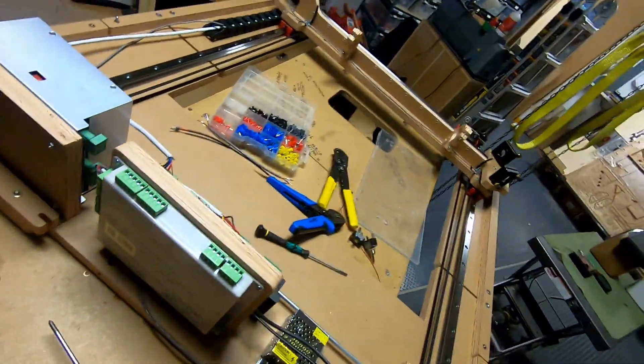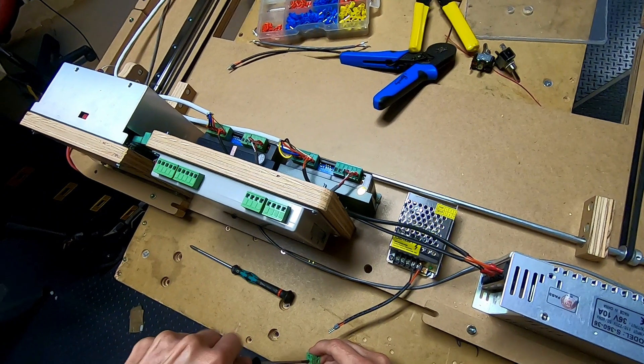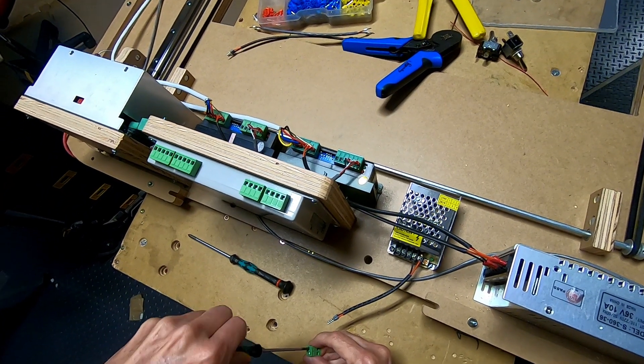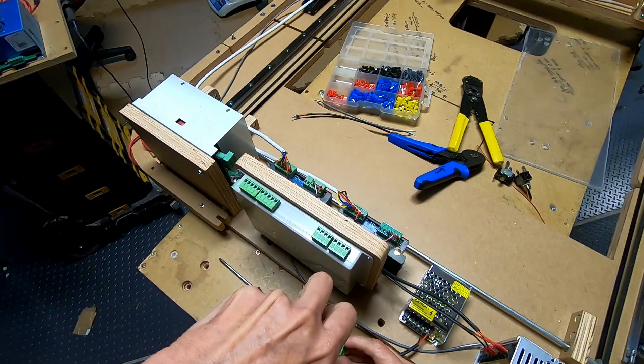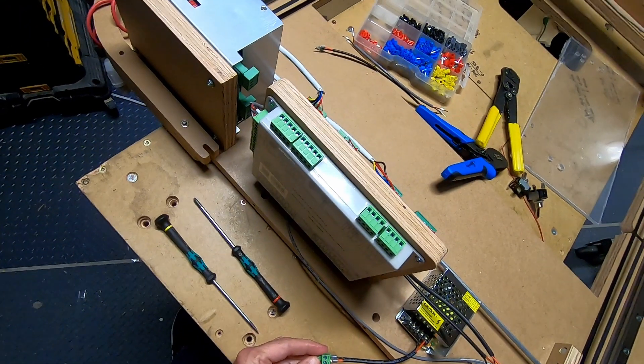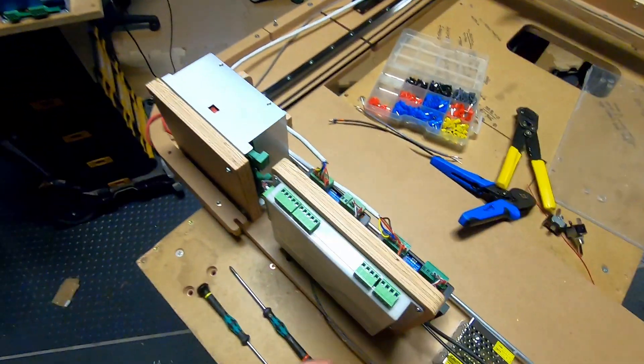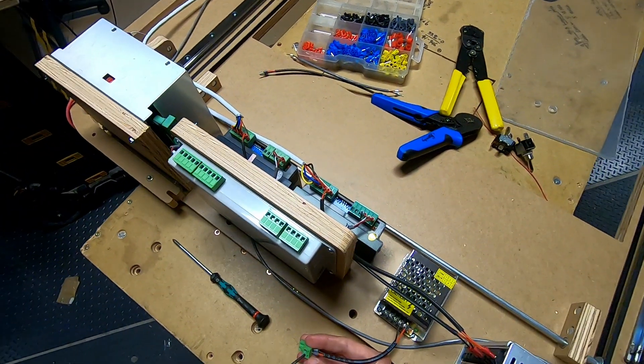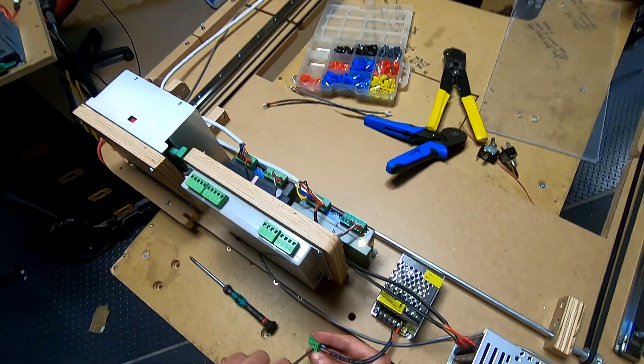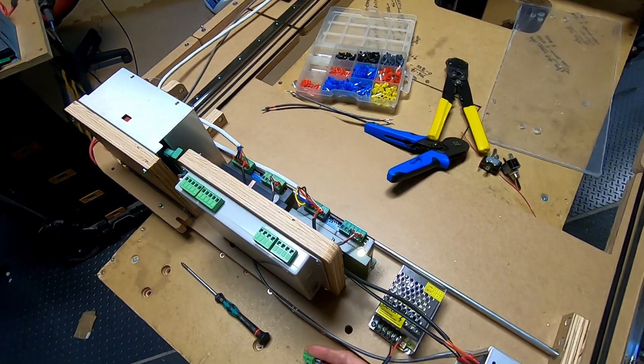So let's go ahead and put it into this one. So 24V is the bottom one, and ground is the top one. Always confirm this, because if you get it backwards, then you can potentially destroy this laser controller.